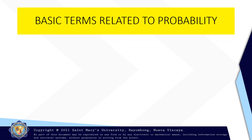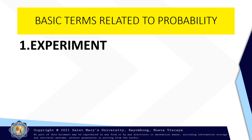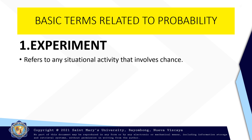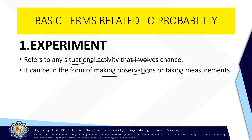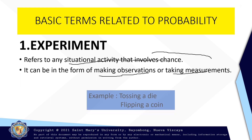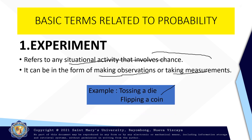We have now the following basic terms related to probability. Number one, we have experiment. Experiment refers to any situational activities or activities that involve chances, like making observations — if we observe something that involves chances — or taking measurements. That is an experiment. The most familiar experiment used in probability is tossing a die or flipping a coin.